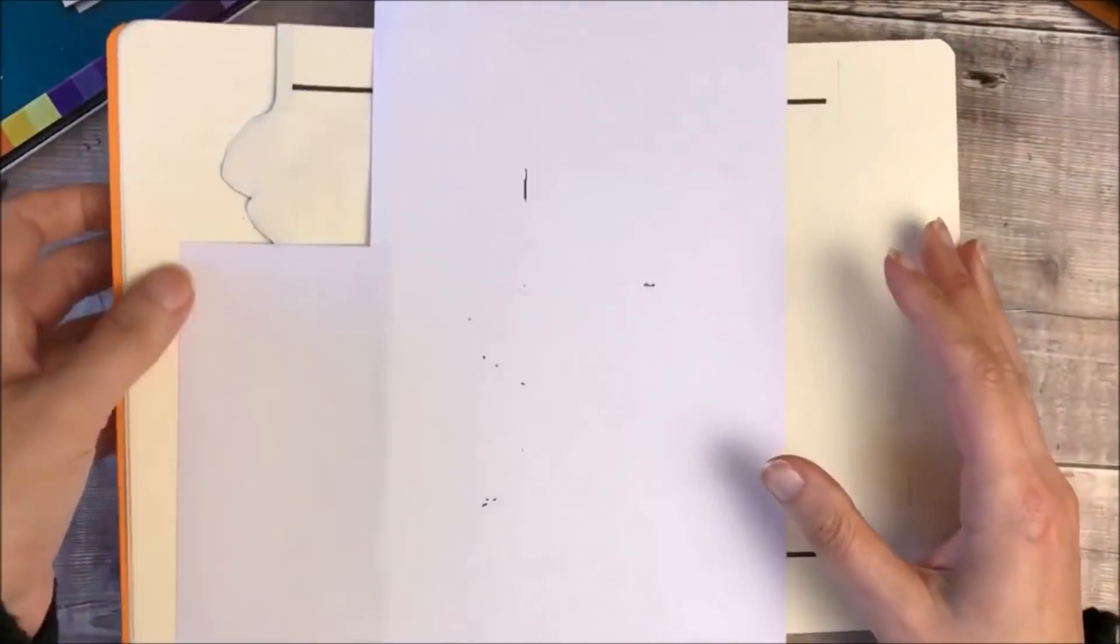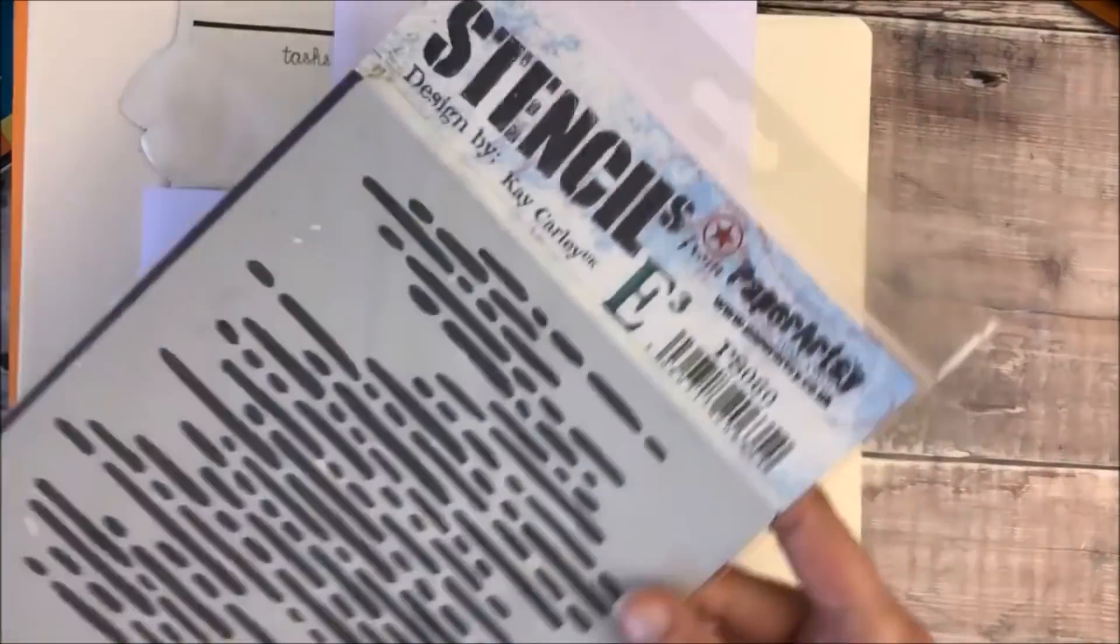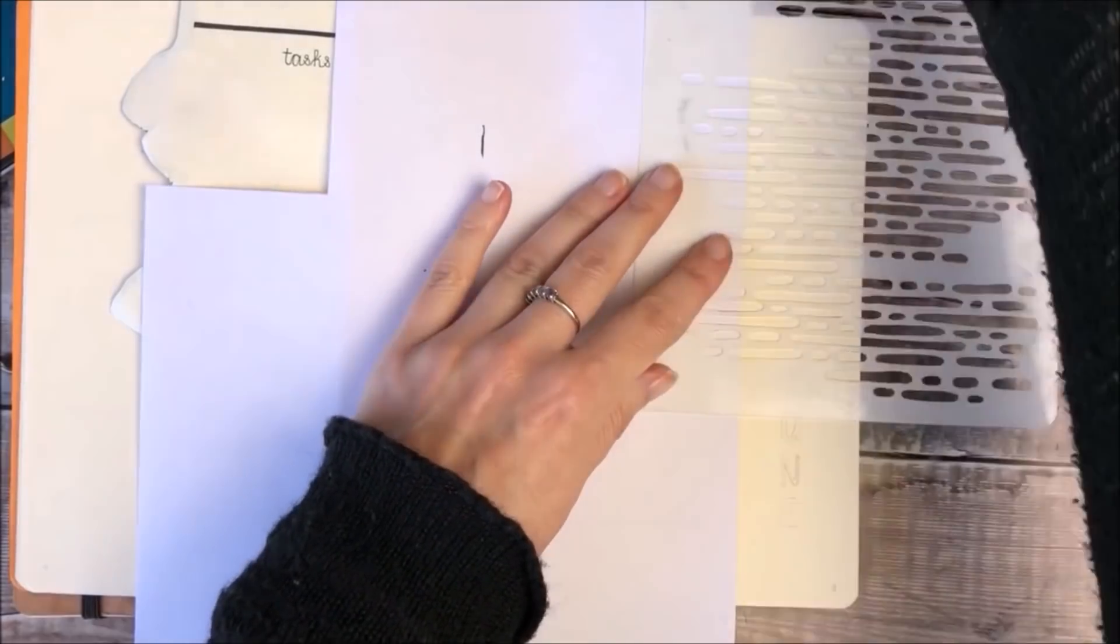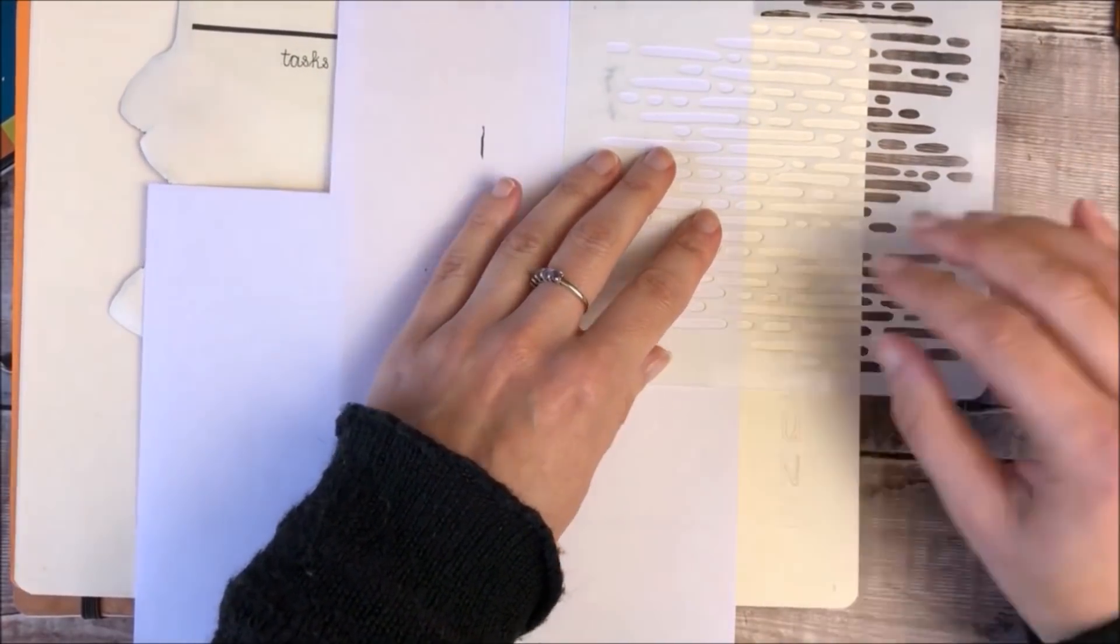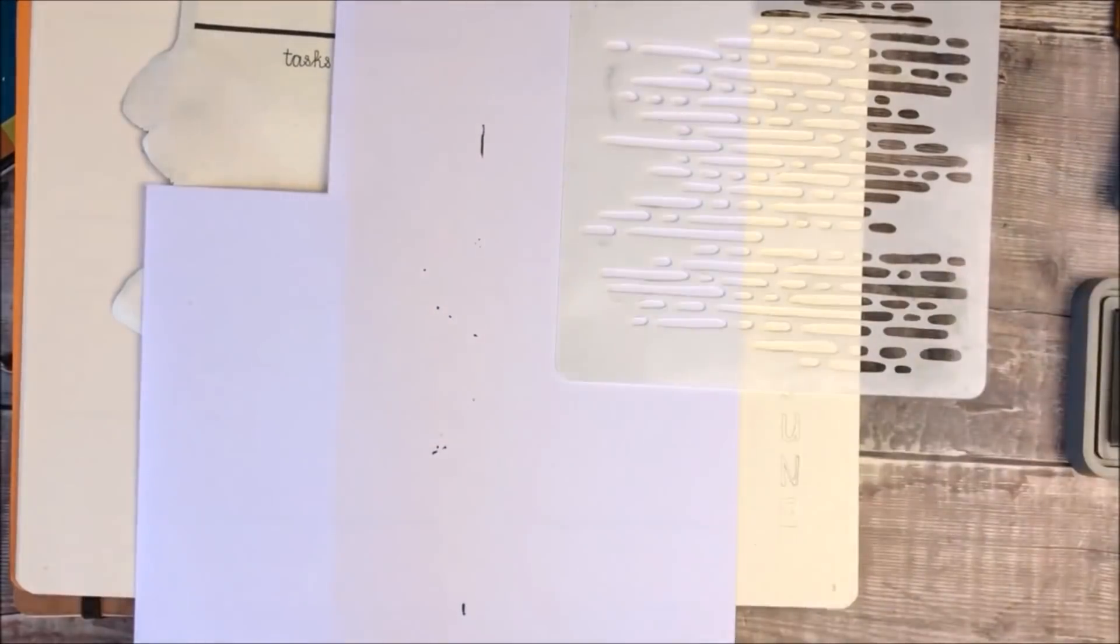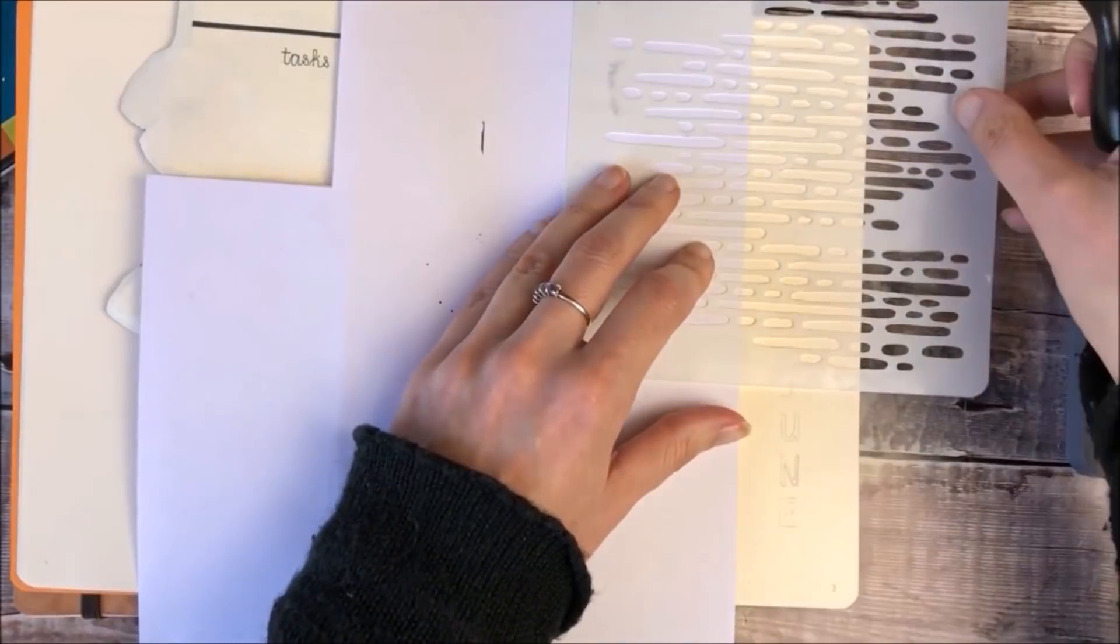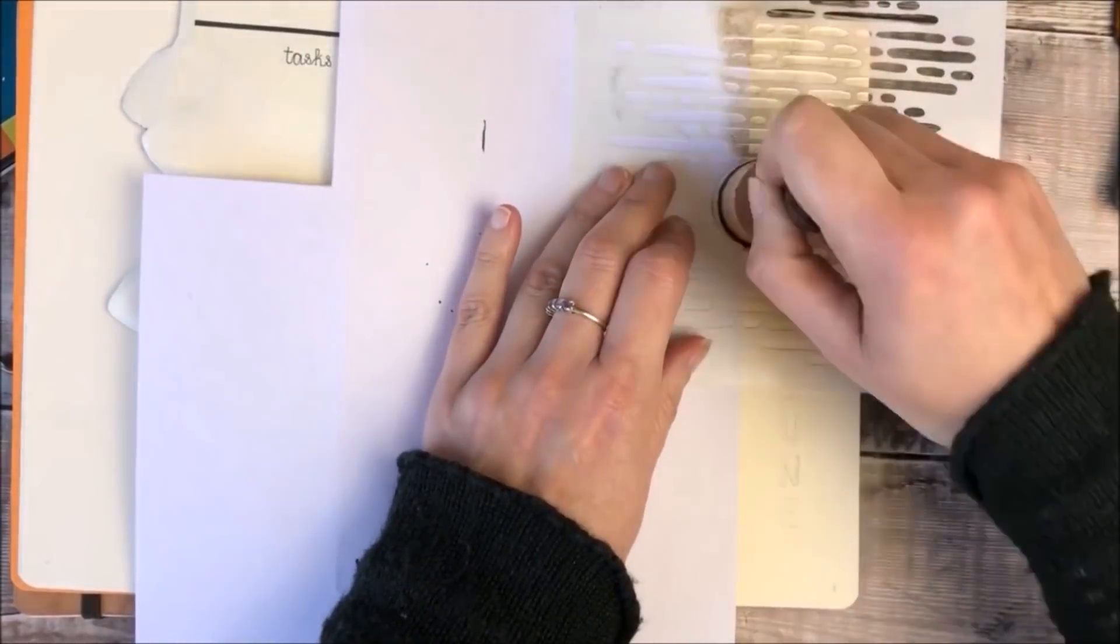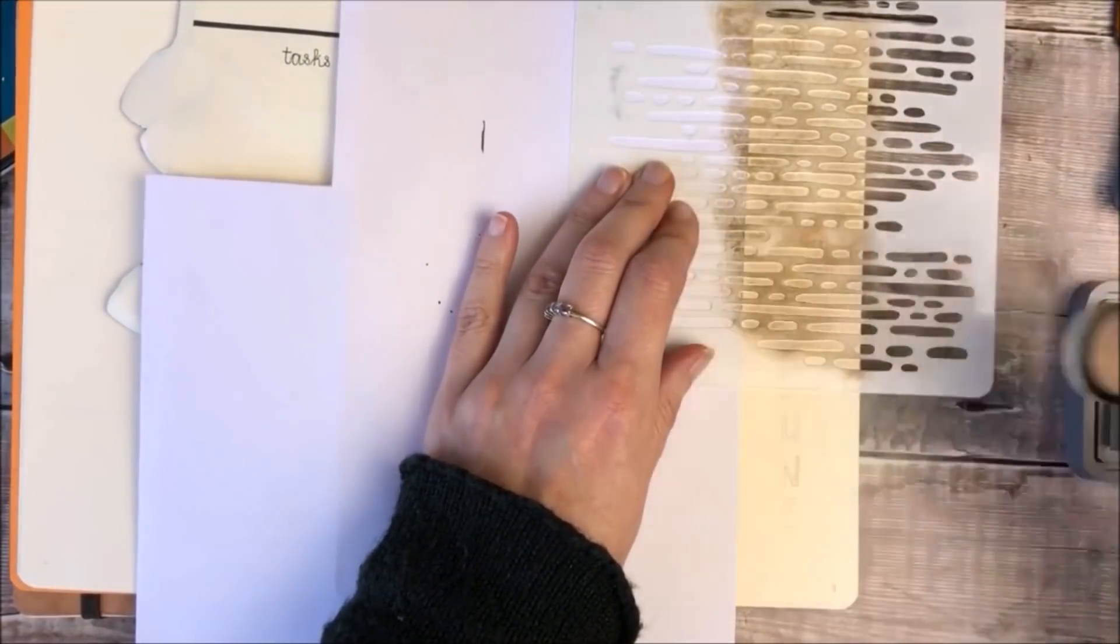Next I decided to add some stenciling, so I'm using a stencil from Paper Artsy and Distress Oxide ink in Frayed Burlap. I thought this design looked a bit like a brick wall, so I thought it'd be fun if this showed through onto the front page as if the flowers were growing up the wall.